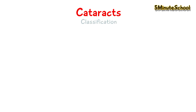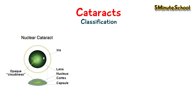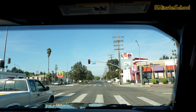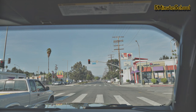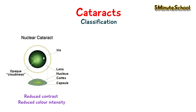There is a classification based on the type of cataracts that a person gets. The first type is called a nuclear cataract, and this is where we have reduced contrast and colour intensity. There is difficulty recognising faces or car number plates; however, it's possible to maintain good reading vision for several years.